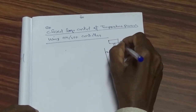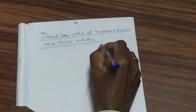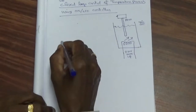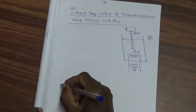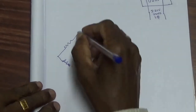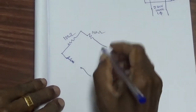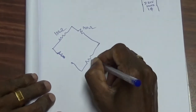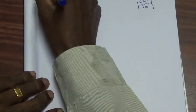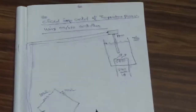PT-100 will be used to sense the temperature of the water bath. It should be signal-conditioned, so a circuit will be constructed. If each arm of the bridge has 100 ohms, across one of the arms this RTD will be connected.